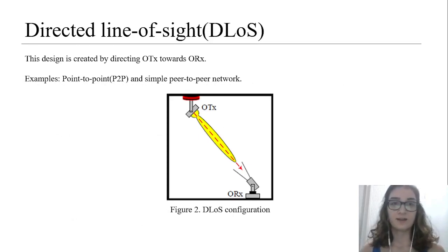Directive Line of Sight DLOS: This design is created by directing the optical transmitter towards the optical receiver. Examples of areas where this design is used are point-to-point and simple peer-to-peer network optical wireless communication connections. Optics exhibit low power requirements due to their concentration in a very narrow beam as well as creating a high power flux density in the photodetector. The DLOS connection configuration is shown in figure 2.